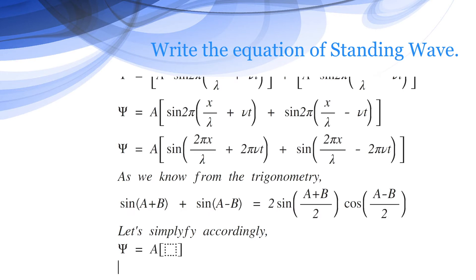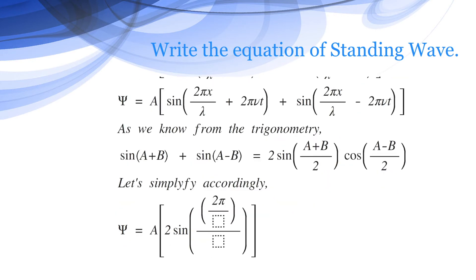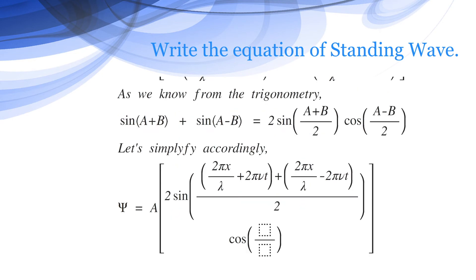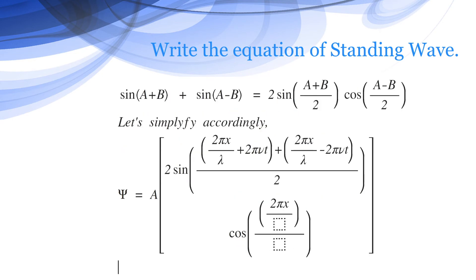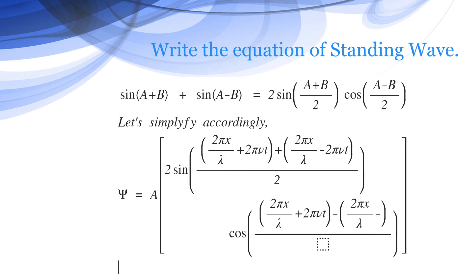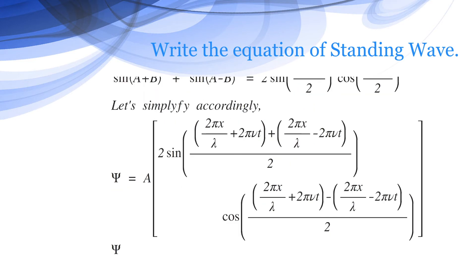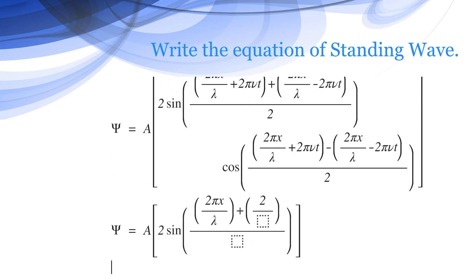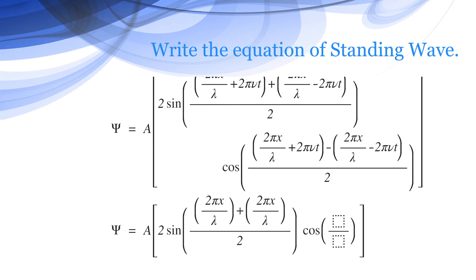Therefore psi becomes A times 2 sin of [(2pi x / lambda + 2pi nu t + 2pi x / lambda - 2pi nu t) / 2] times cos of [(2pi x / lambda + 2pi nu t - 2pi x / lambda - 2pi nu t) / 2]. Cancelling 2pi nu t from the first factor and 2pi x / lambda from the second, the equation reduces to A times 2 sin(2pi x / lambda + 2pi x / lambda) / 2 times cos(2pi nu t + 2pi nu t) / 2.